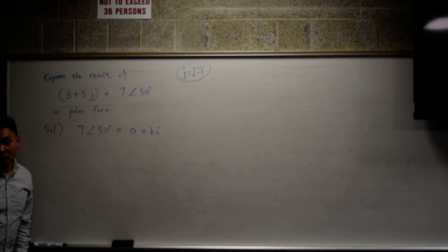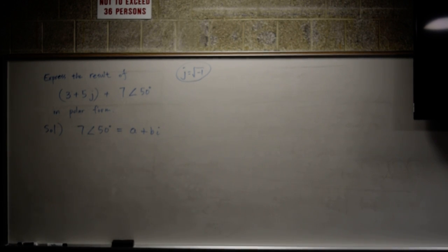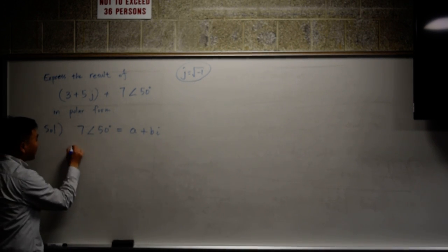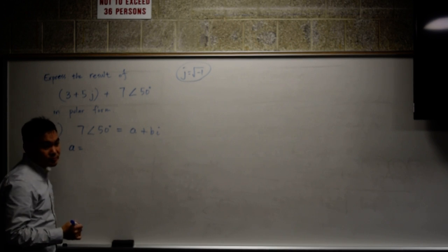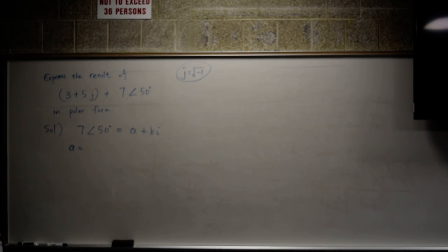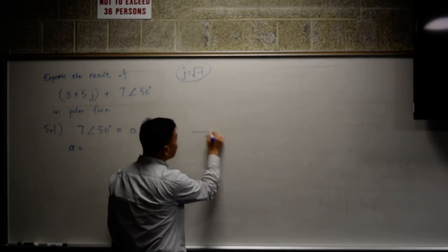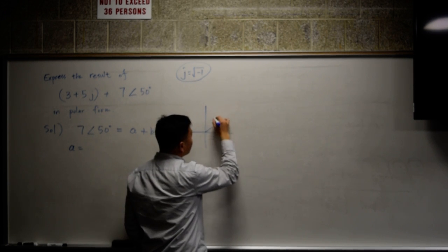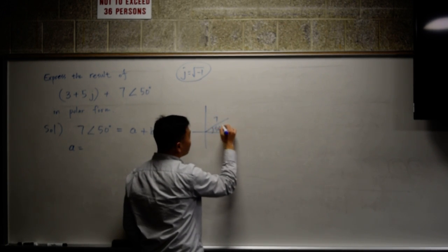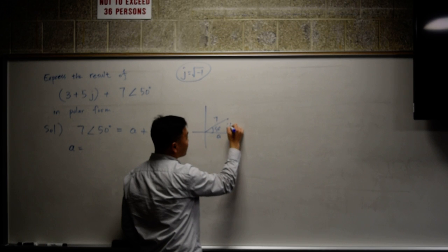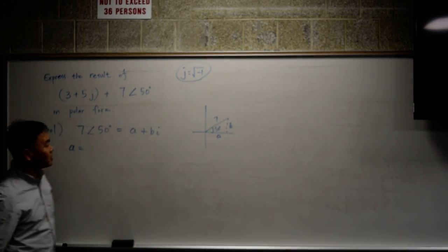Let's figure out 7 angle 50 degrees as a plus bi. What is the value of a? What's the value of b? How would you find it? Can you draw the picture? 7 and this is 50 degrees and you're looking at this length and that length. How do you find a?